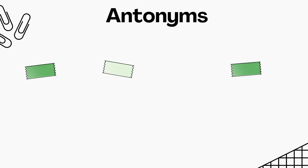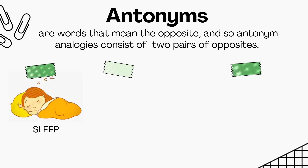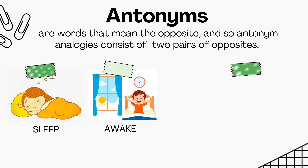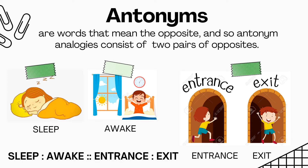The second type of analogy is antonyms. These are words that mean the opposite. Antonym analogies consist of two pairs of opposites. For example, sleep and awake, and entrance and exit. Therefore, our analogy is: sleep is to awake as entrance is to exit.